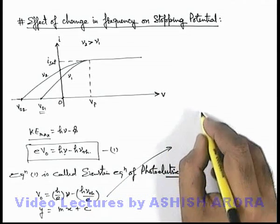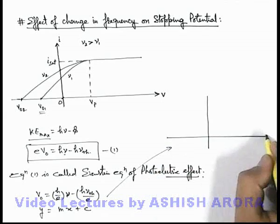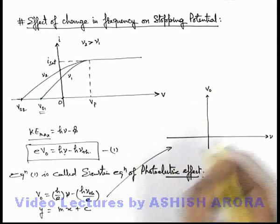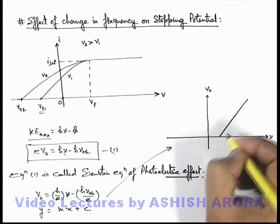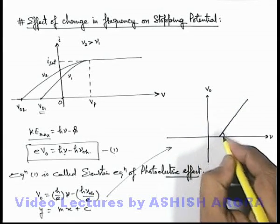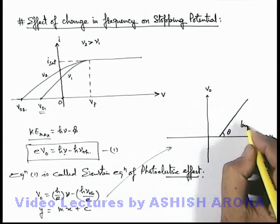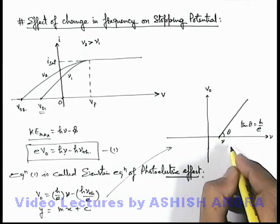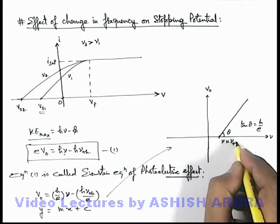And if we just plot a curve in frequency and stopping potential, then it'll be a straight line shown like this. And here we can see the slope of a straight line tan theta we can write as h by e, and the curve starts from point nu is equal to nu threshold.